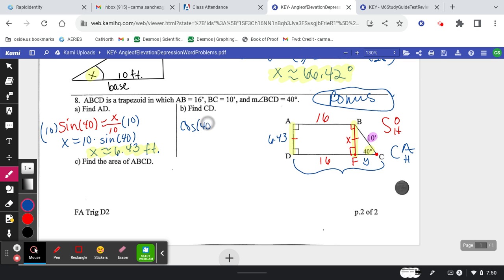So cosine of 40 is equal to the adjacent, oops sorry, we called it a Y, over the hypotenuse which is still 10. Then multiply by 10 to both sides, and this is what you're going to be plugging into your calculator. 10 times the cosine of 40, and see what you get. Please take a minute to try that.